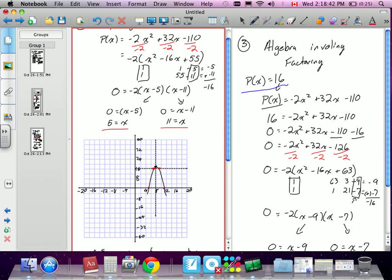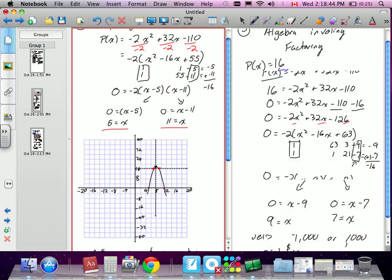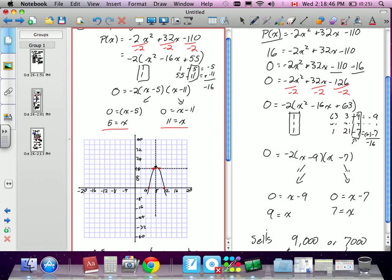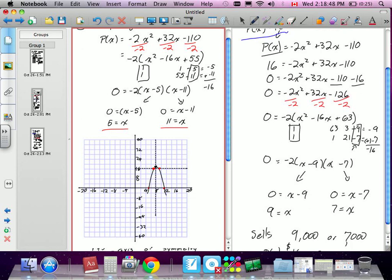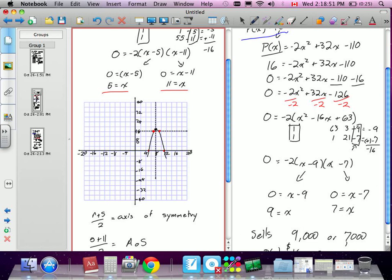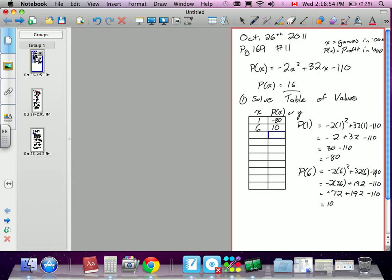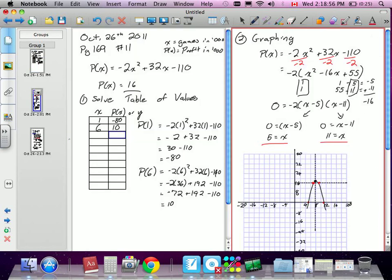So out of the three methods, the last one probably the fastest. Remember by graphing, there's quite a bit of work and we weren't even 100% sure of our answer. Trial and error, there's a lot of things you guys can try out. We would have had to go all the way up to 9, so we would have to use that same equation 9 different times. The last method was our fastest method of solving this.